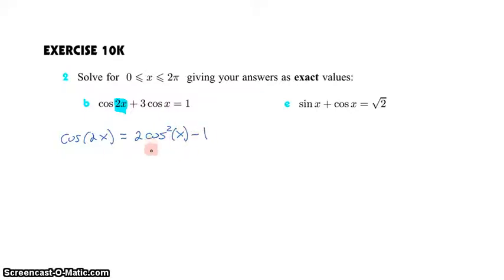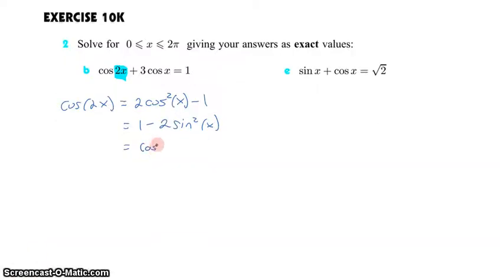Now, why did I choose this one and not the other two possibilities? The other two possibilities are 1 take 2 sine squared of X and cos squared of X take sine squared of X. So why do I choose this one? Well, it's because looking at this equation, I have a cosine of X. That's going to give me something to combine together. Cosine of X and cosine squared of X, I might be able to get them to work together.